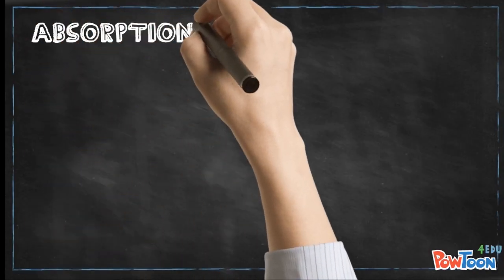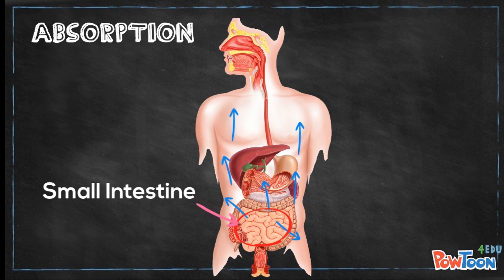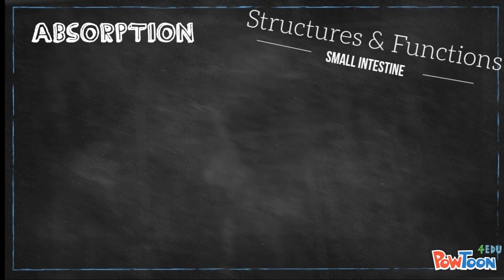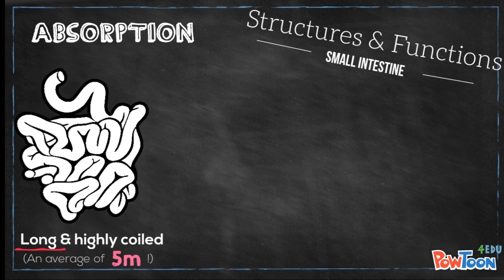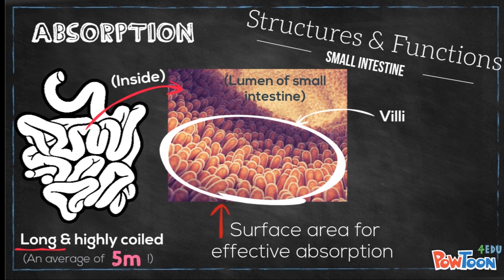Moving on to the third step, absorption, where digested substances are absorbed into the bloodstream and transported to all parts of the body. The absorption process mainly takes place in the small intestine, with a smaller portion of water and minerals being absorbed in the large intestine. The small intestine is very long and highly coiled, and its lumen is covered with a large number of villi — structures specialized in absorption — together providing a very large surface area.